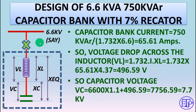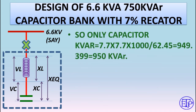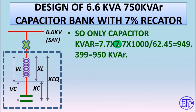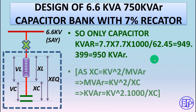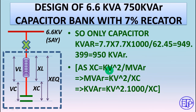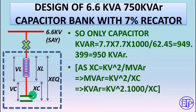Now we need to find the KVAR of the capacitor alone. It is calculated as kV² × 1000 / XC. Using VC = 7.7 kV and XC = 62.45 ohms, this gives 950 KVAR. So for a 750 KVAR bank, you must select a capacitor rated at 950 KVAR — not 750.